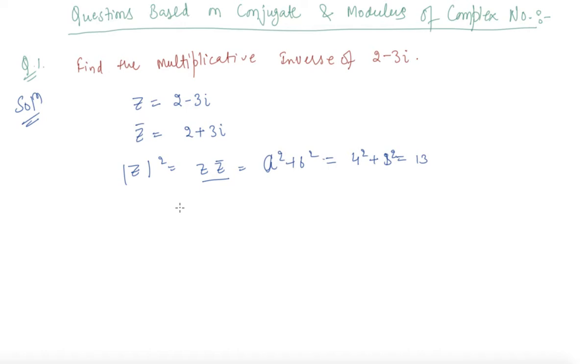So the multiplicative inverse is z inverse equals z bar upon mod z squared, because I can write z inverse as 1 by z, and z times z bar equals mod z squared. So upon 13, this will equal 2/13 plus 3/13 i. So this is the multiplicative inverse of the function given to us.